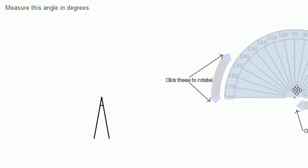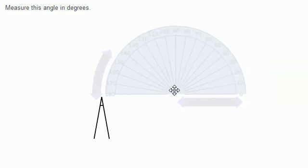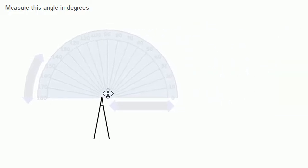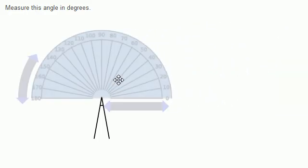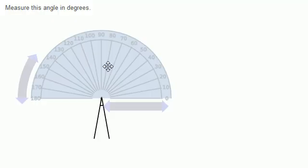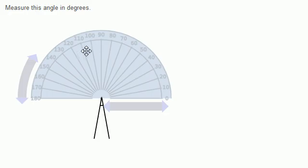In general, when you want to measure an angle, what you want to do is put the center of your protractor at the vertex of the angle — or put the vertex of the angle at the center of the protractor. Then you want to either rotate the angle or rotate the protractor. In this case, we're going to rotate the protractor so that the zero mark is at one of the sides of the angle, and the other side of the angle is within the protractor.